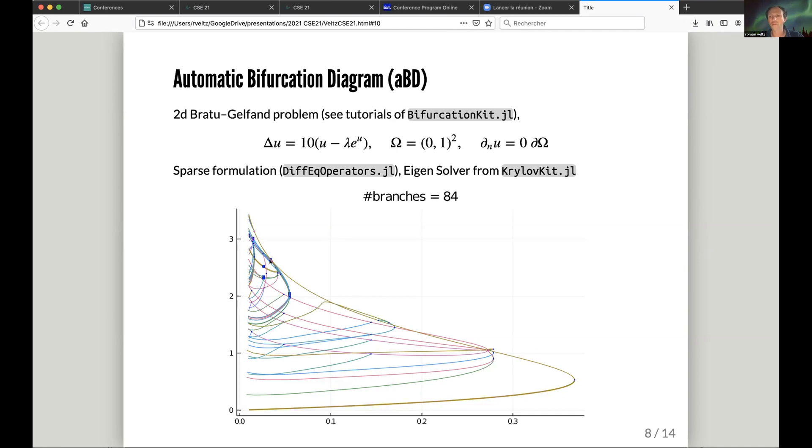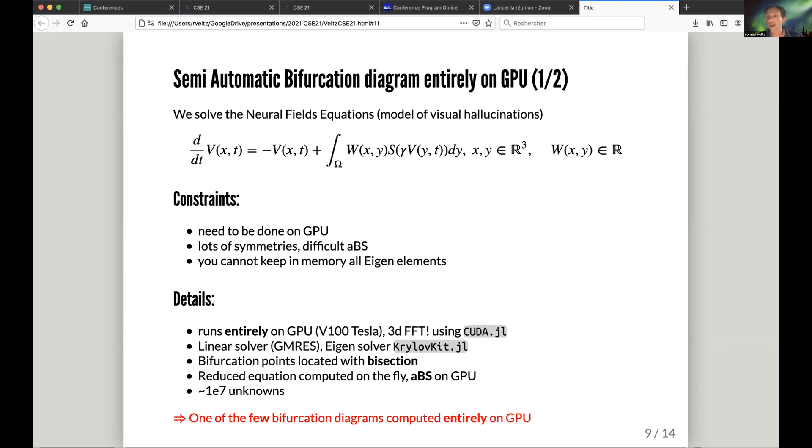Now the second example I want to show you is basically an example entirely working on GPU. It's a model called neural field equations, a model of visual hallucinations. You can find it very easily on the web. So the goal is, in this case, to solve stationary solutions of this non-linear integral equation, which is 3D. If you do it on a GPU, it's crazy not to do it on the GPU - it's so fast.